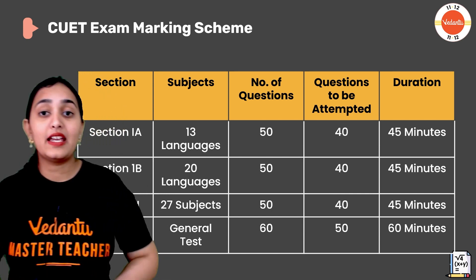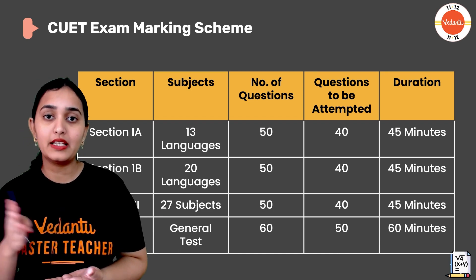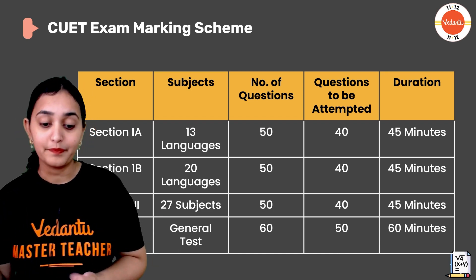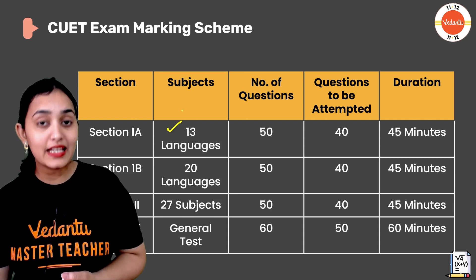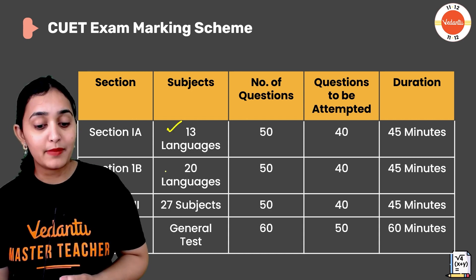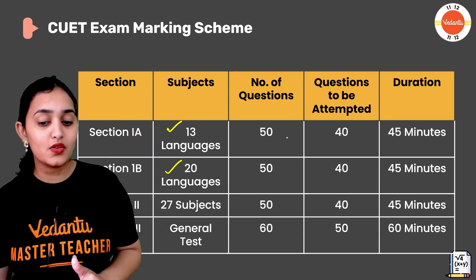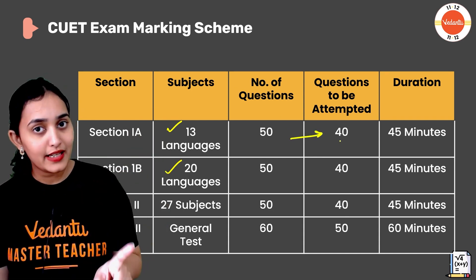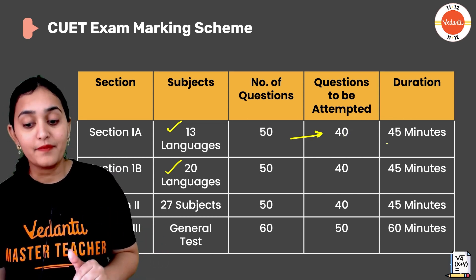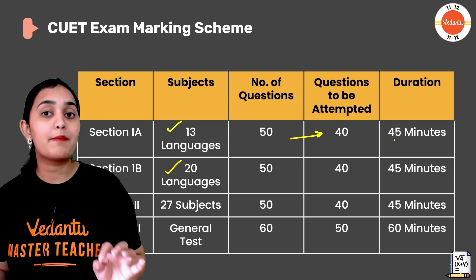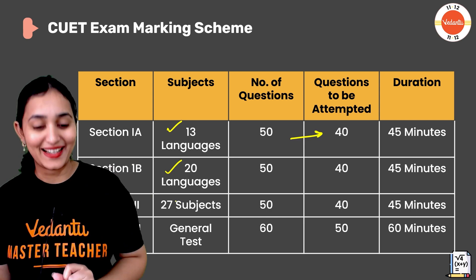Now let's see the marking scheme. Section 1A has 13 languages, and Part 1B has 20 other languages not in Part A. There are 50 questions but you only attempt 40 — don't attempt all 50. You get 45 minutes, and don't attempt extra questions because there is negative marking. In Section 1B, from the 20 languages available, if you've selected one, you'll need to attempt 50 questions.